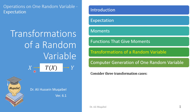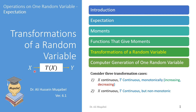We will go over three different cases. We will look at continuous transformation, and then we will consider two cases where the input is continuous: the monotonic increasing or decreasing case, and the case where the transformation is not monotonic. Finally, we will look at the case where the random variable is discrete.